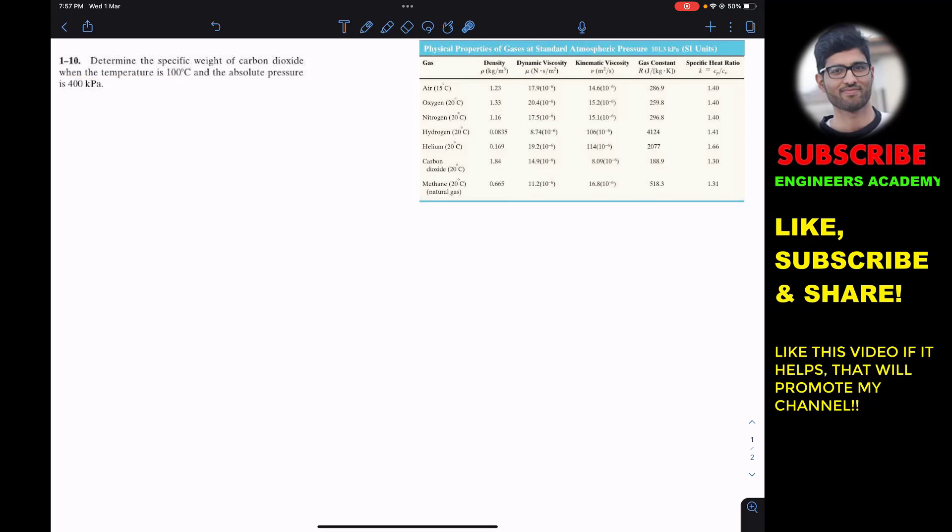Now we know that the specific weight is represented by gamma and is equal to the weight per unit volume. The weight is mass times g divided by volume, and the mass per unit volume is the density, so we can say that the specific weight is density times g.